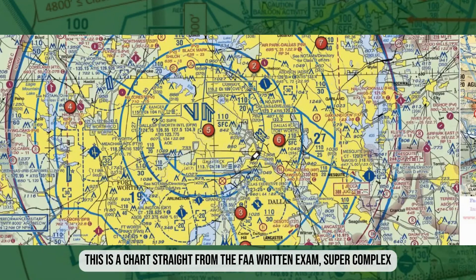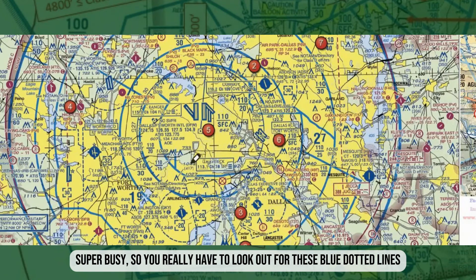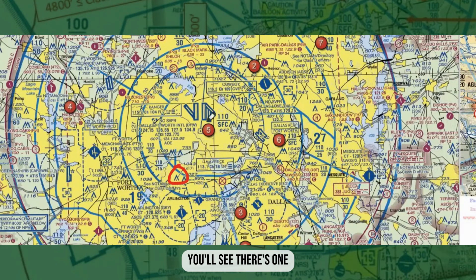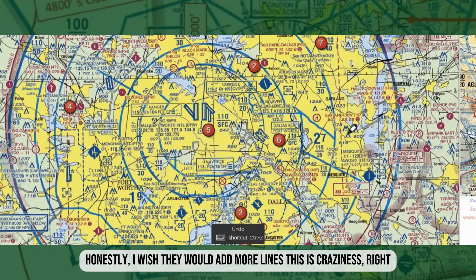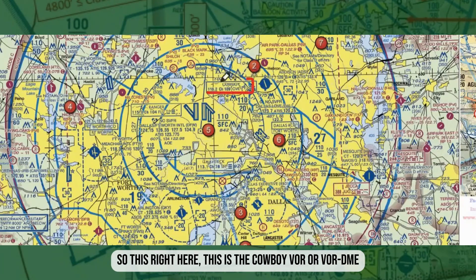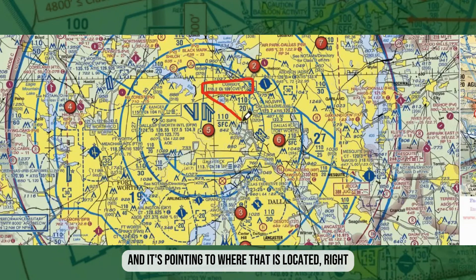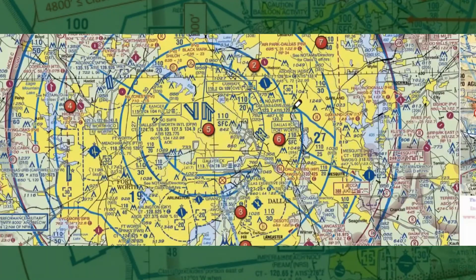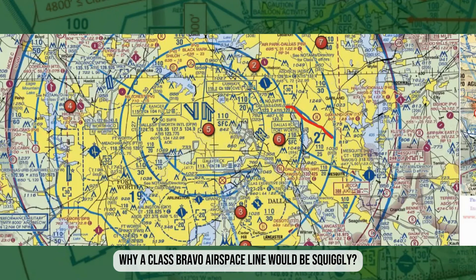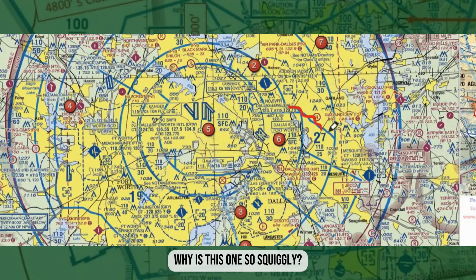This is the Dallas Fort Worth area — a chart straight from the FAA written exam, super complex and busy. You really have to look out for those blue dotted pointer lines. There's a Class Delta here, and notice this really squiggly Class Bravo line. Why would it be squiggly when most airspace lines are straight circles or straight lines?